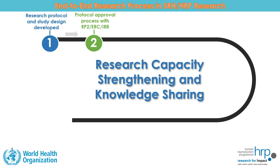The second stage is undergoing the approval process for the study protocol and related documentation from the research project review panel, referred to as RP2, the Research Ethics Review Committee, known as ERC, and the Institutional Review Board or IRB. Before a research study can begin, its study protocol needs to be reviewed to ensure that it meets the required scientific, technical, ethical, and financial standards of HRP as well as of the institution where the study will be conducted.